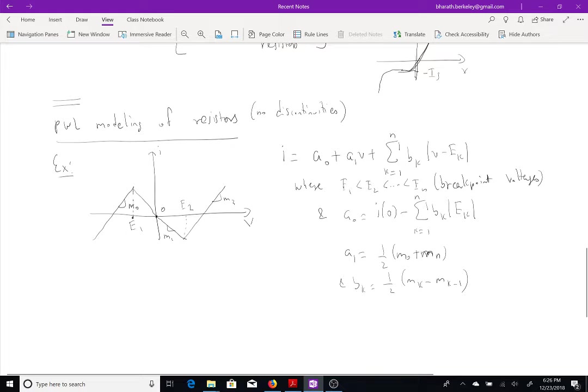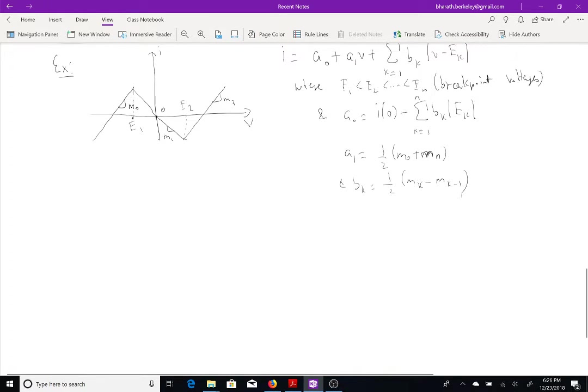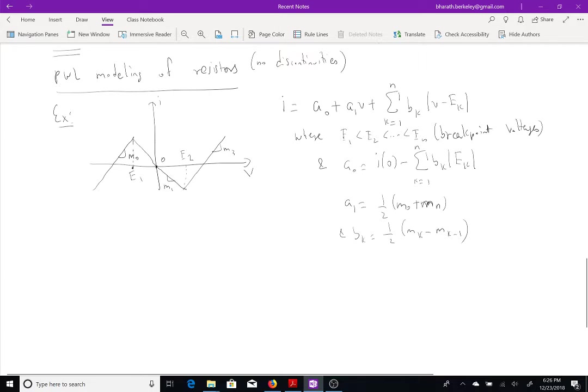So, in this case, let's see, actually, what we get. I know I'm running out of time. We are going over, but let's just look at this example and see what we get for this particular problem. So, in our case, A0 is going to be I0 minus sigma k going from 1 to 2, right? So, in other words, we have two breakpoint voltages, of Bk, absolute value of Ek.